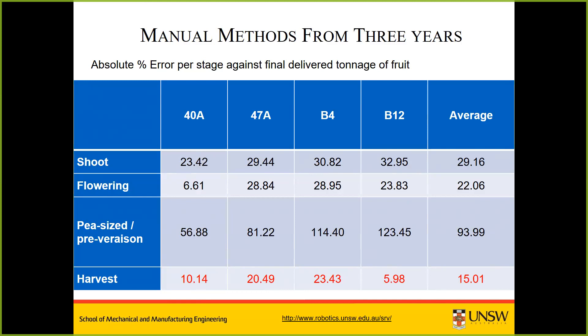You would expect the error to decrease as we get closer to harvest. With the exception of the pea-sized and pre-veraison measurements, it does. The key takeaway is that delivered tonnage at harvest is quite different from the best manual estimates, even at harvest. If we have a manual estimate, even measuring the fruit on the vine a day or within a couple of days prior to harvest, the manual estimates are still out on average by 15%.